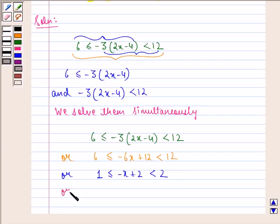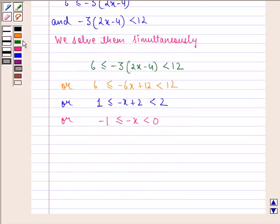Or minus 1 is less than equal to minus x which is strictly less than 0. Or we can say 1 is greater than equal to x which is strictly greater than 0.